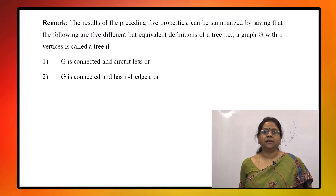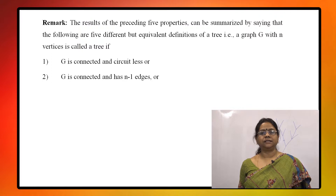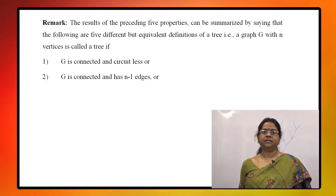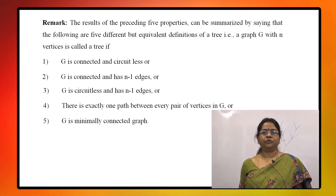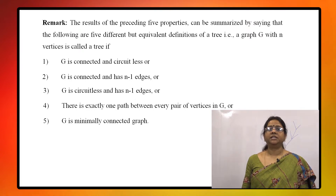Compiling all the properties, we can state 5 different but equivalent definitions of a tree. First, a graph G with n vertices is a tree if G is connected and circuit-free. Second, it is a tree if G is connected and has n-1 edges. Third, if G is circuitless and has n-1 edges, it is a tree. Fourth, there is exactly one path between every pair of vertices in G. Fifth, G is a minimally connected graph.